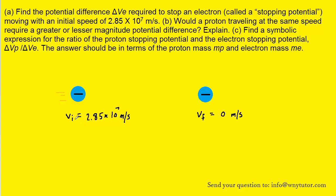So here we have the initially moving electron whose speed is 2.85 times 10 to the seventh meters per second. And then because it's brought to rest, its final speed is equal to zero meters per second.